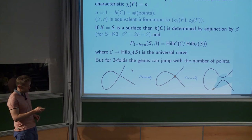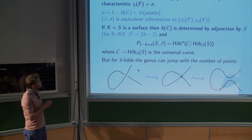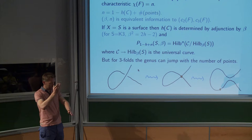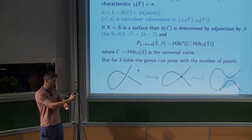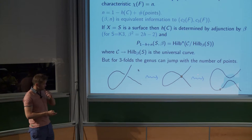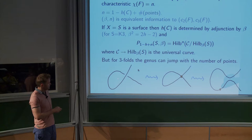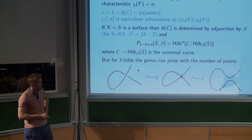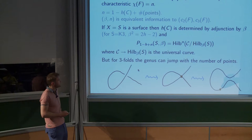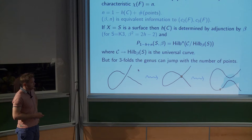For threefolds the genus can jump, which is why you can't use just the genus as your data. This is the standard example: you have two curves in three-space crossing — this can't happen in a surface. You move them until they cross, and at that point you've lost a point because they crossed; that point bubbles off and becomes the point in the stable pair. In a further family you move that point around the curve, smooth the curve: genus increased by one, number of free points also increased by one, but this Euler characteristic quantity remains constant.